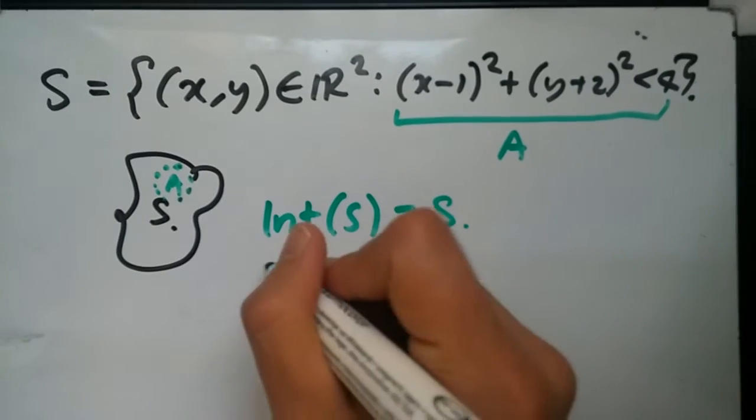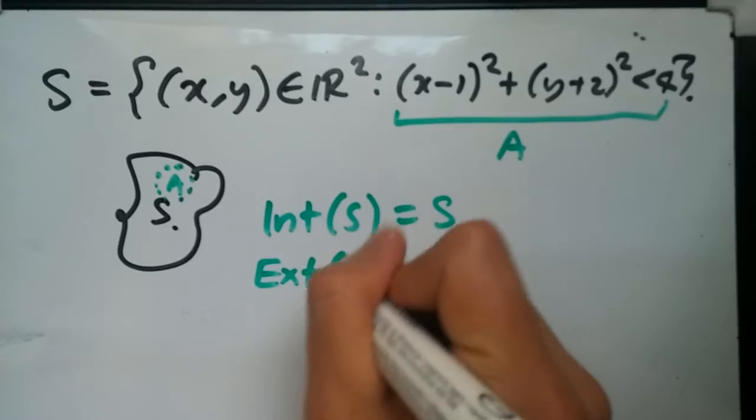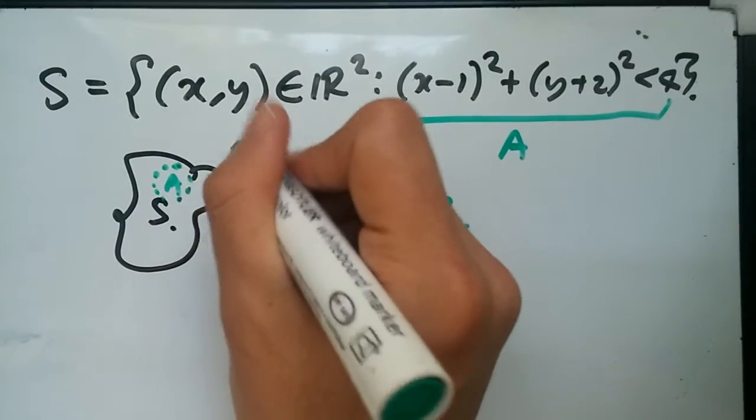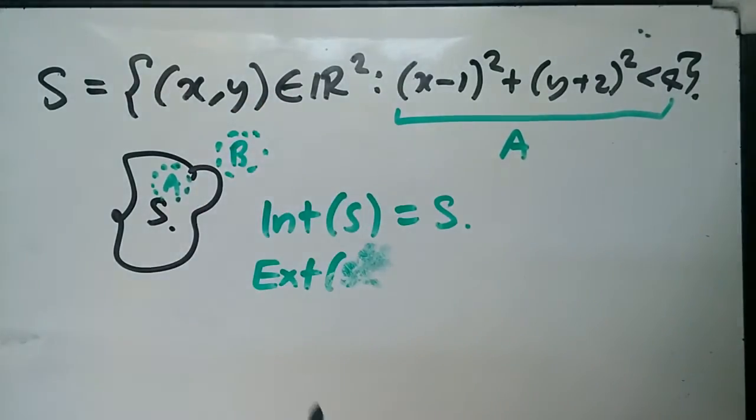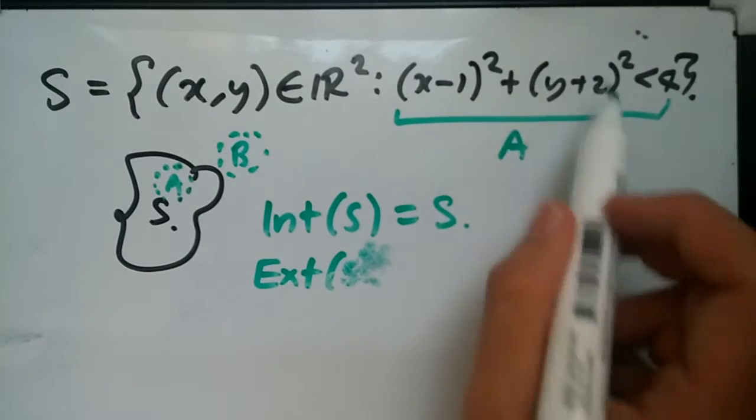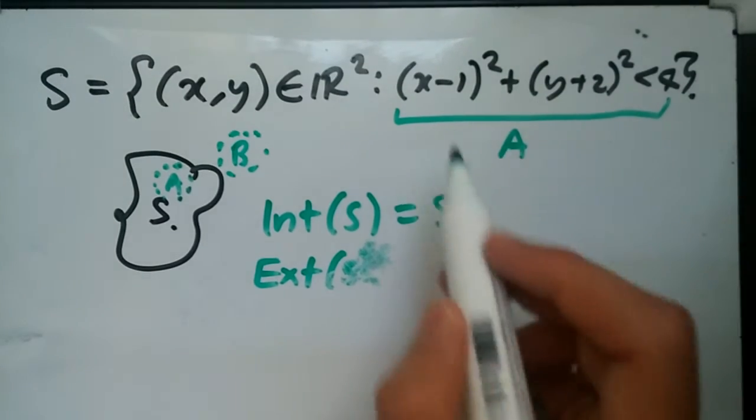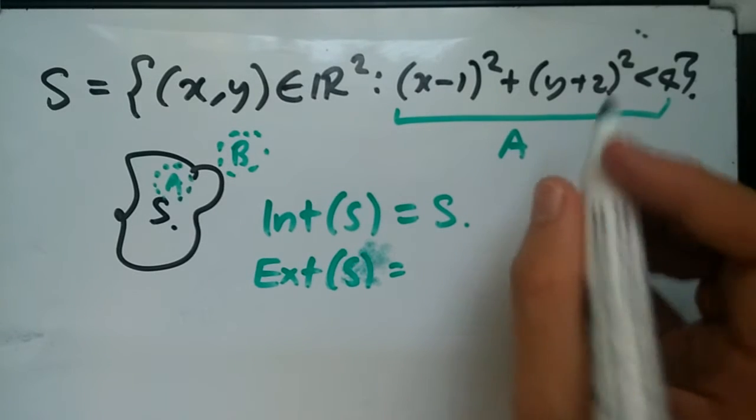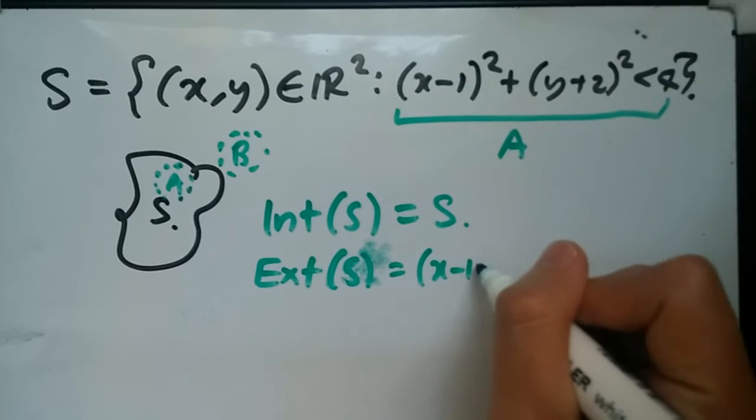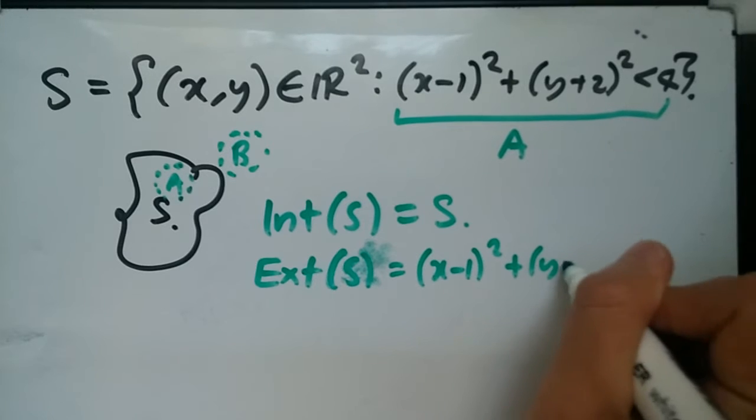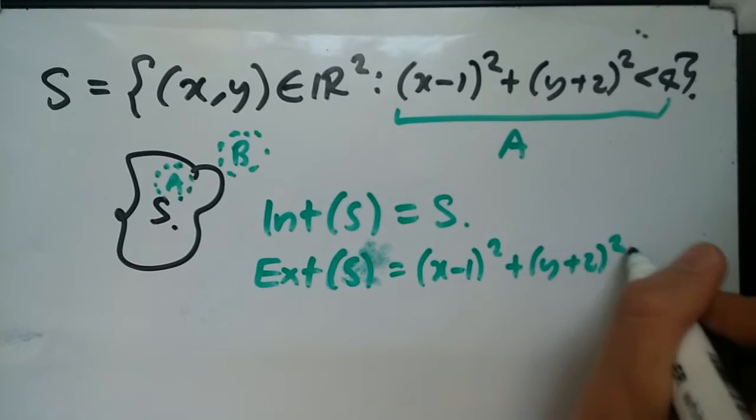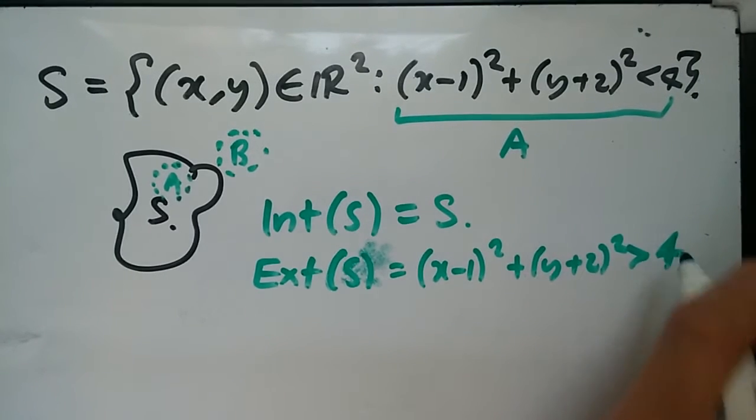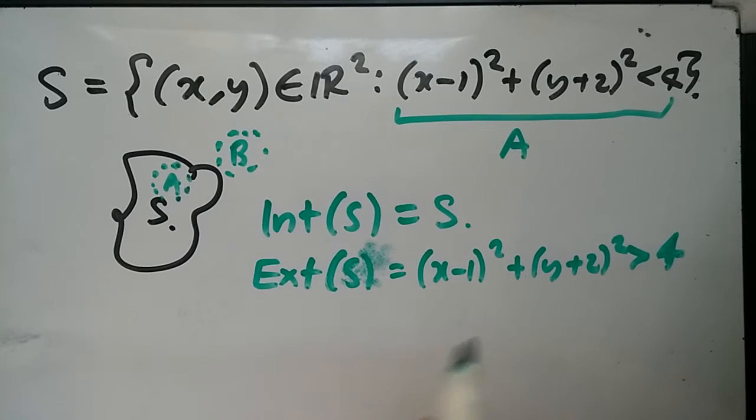Now, let's talk about the exterior function. The exterior would be outside this interval, outside this space. Outside the space would be outside this range. So to be outside this range, it's not less than 4, but it's going to be greater than 4. So it would be (x-1)² + (y+2)² > 4. So far, this is okay.